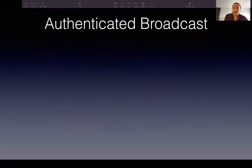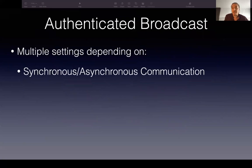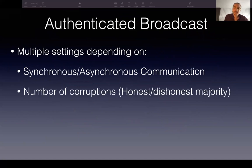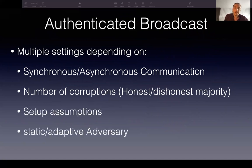Authenticated broadcast comes in many flavors depending on several factors, such as synchronous or asynchronous communication between parties, the number of parties, the number of corruptions that the adversary can achieve, which differentiate between an honest or dishonest majority setting, the setup assumptions, and whether the adversary is static or adaptive.